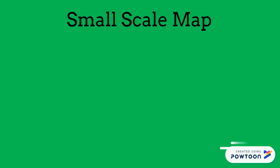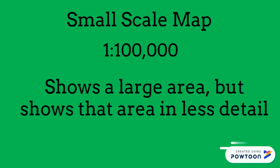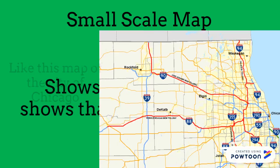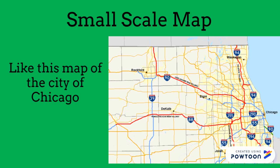A small scale map, such as 1 to 100,000, shows a large area, but shows that area in less detail, like this map of the city of Chicago.